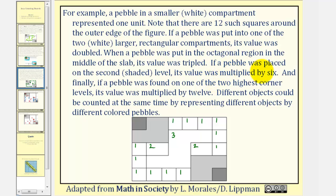If a pebble was placed on the second shaded level, its value was multiplied by six. That would be here and here. And finally, if a pebble was found in one of the two highest corner levels, its value was multiplied by twelve. That would be here and here. Different objects could be counted at the same time by representing different objects by different colored pebbles. Let's look at an example.